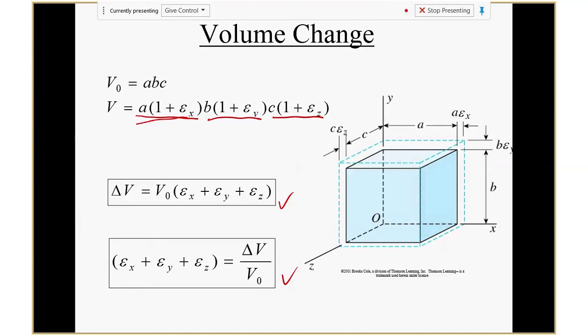Also, εx + εy + εz is another invariant — that summation is constant when you change the coordinate direction. Your εx + εy + εz is the non-dimensional percent volume change. It can be a reduction or increase — inflation or compression.